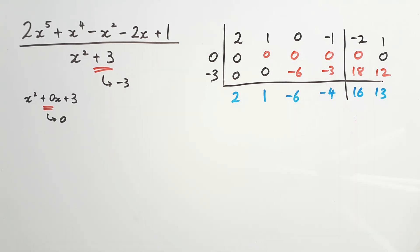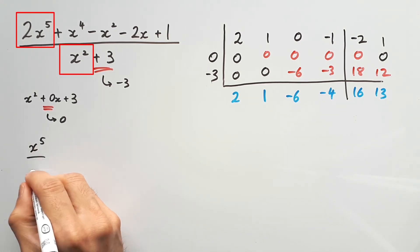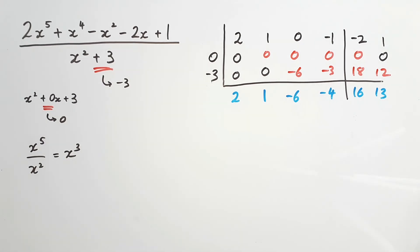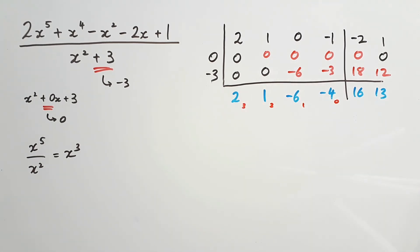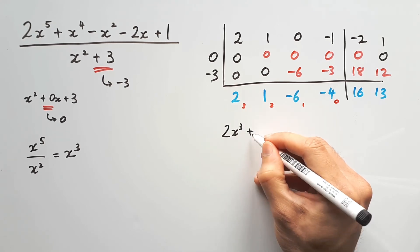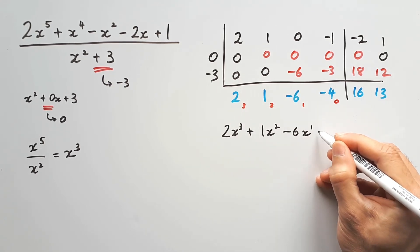So now we have our coefficients 2, 1, negative 6, and negative 4. This is for our quotient, and we have the coefficients for our remainder, 16 and 13. What kind of quotient will we be making? You can take one of two approaches to figure that out. You can either take the highest degrees and divide them, so x to the power 5 divided by x squared, giving us x cubed. Or just as easily, you can count up from negative 4, in terms of powers, as 0, 1, 2, and 3, which indicates the same thing. And so our quotient is 2x cubed plus 1x squared minus 6x minus 4.